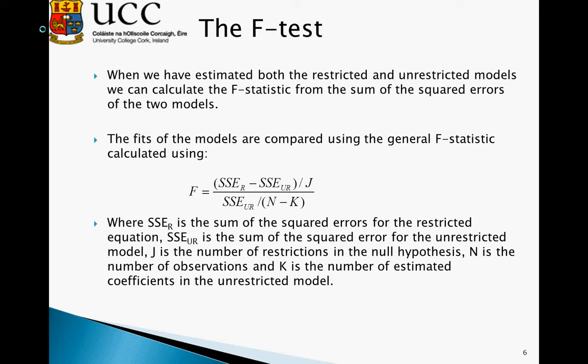The sum of squared errors of the restricted model is obtained once we estimate the restricted model, and most statistical software will produce this for you. For instance, Stata will provide the sum of squared errors. The sum of squared errors of the unrestricted model, SSE_UR, represents the sum of squared errors from our unrestricted estimation. J is the number of restrictions introduced in the null hypothesis — in this example, beta 3 equals beta 4 equals 0, so there are two restrictions. n is the number of observations, and k is the number of estimated coefficients in the unrestricted model, essentially counting the number of betas estimated.